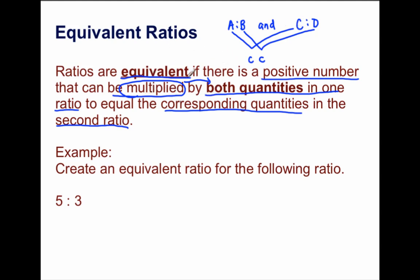So it says: if I could take both quantities in one ratio and multiply them by the same positive number to equal the corresponding quantities in the second ratio, then both of these ratios are equivalent. Let's put this into action now.